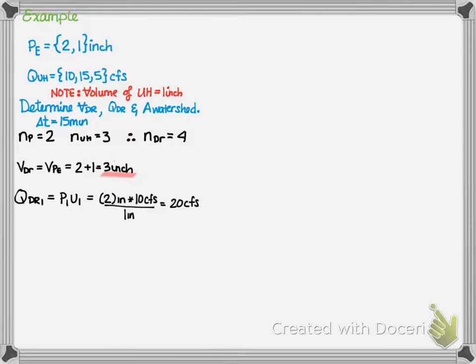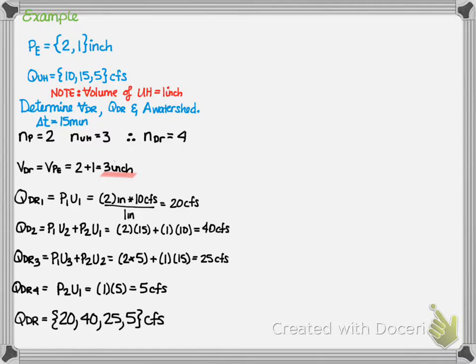Next, let's calculate the flow rate. Q at direct runoff point 1 is P1U1, which is 2 inches times 10 CFS divided by 1 inch gives us 20 CFS. Q2 is P1U2 plus P2U1, which is 2 times 15 plus 1 times 10, which gives us 40 CFS. You might be thinking the units are CFS per inches. But remember, the volume of a unit hydrograph is 1 inch, and that's why you need to divide each value by 1 inch. We repeat this for all the remaining steps. And we calculate a direct runoff hydrograph of 20, 40, 25, and 5 CFS.